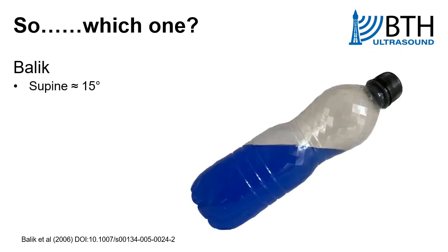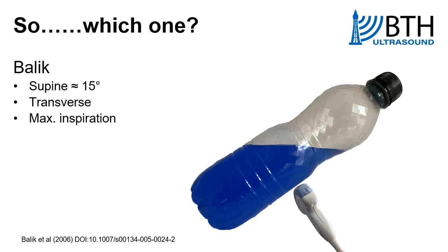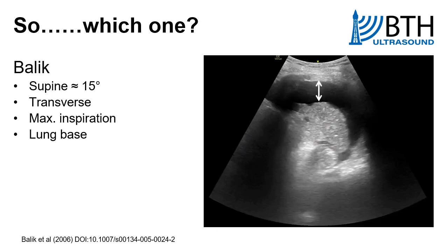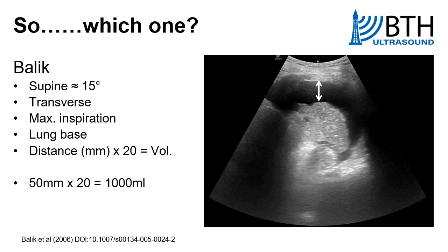The next method is BALIK. This time the patient is reclined at about 15 degrees of elevation. The probe is in a transverse orientation, performed at maximum inspiration, and positioned posterior-lateral just above the level of the diaphragm. You then measure the distance from the posterior or dorsal chest wall through the hypoechoic effusion to the lung. That distance in millimeters is multiplied by 20 to give the volume. For example, 50 millimeters times 20 would give you a 1000 ml approximate volume of pleural effusion.